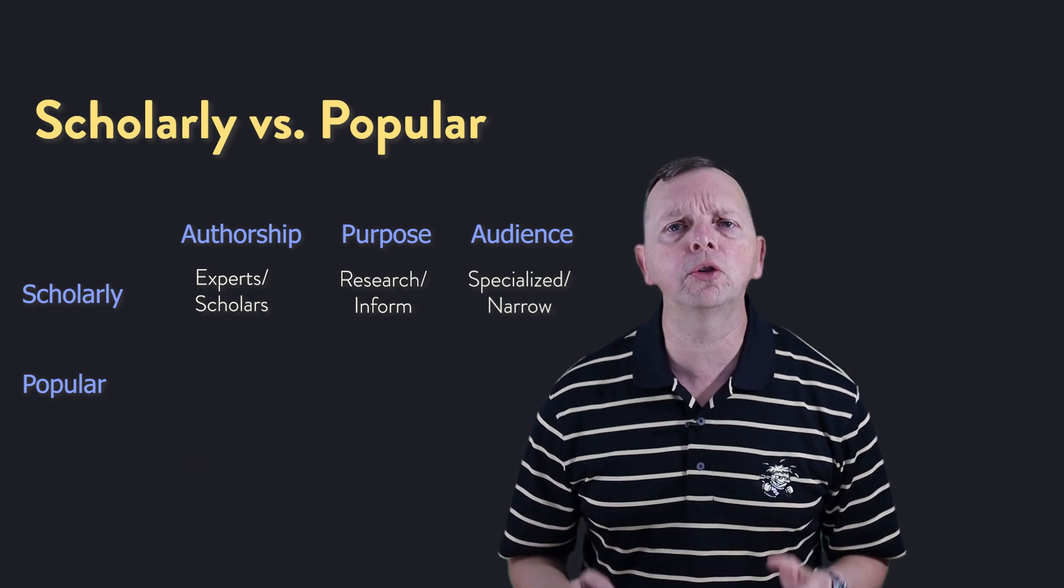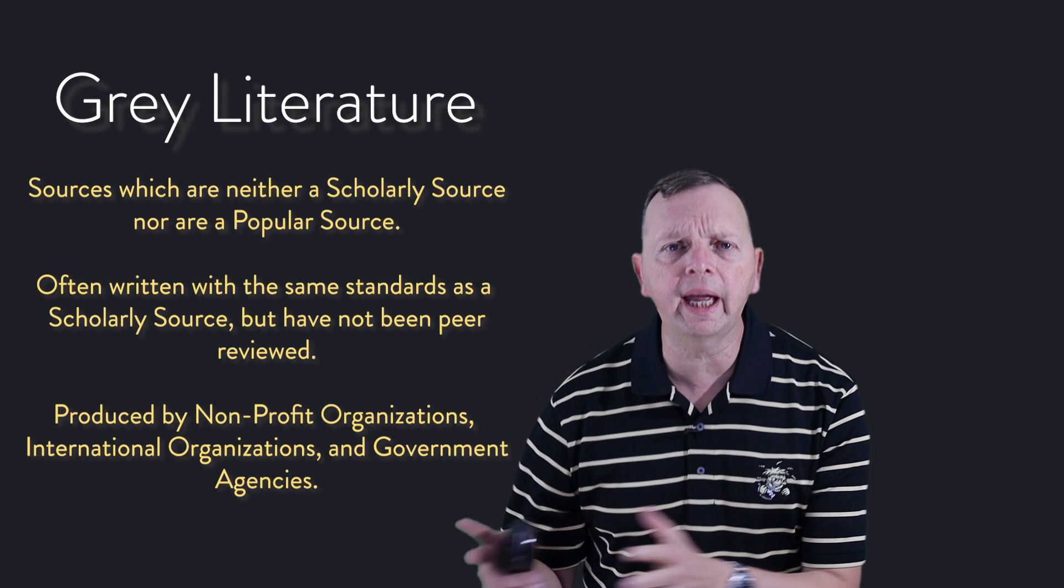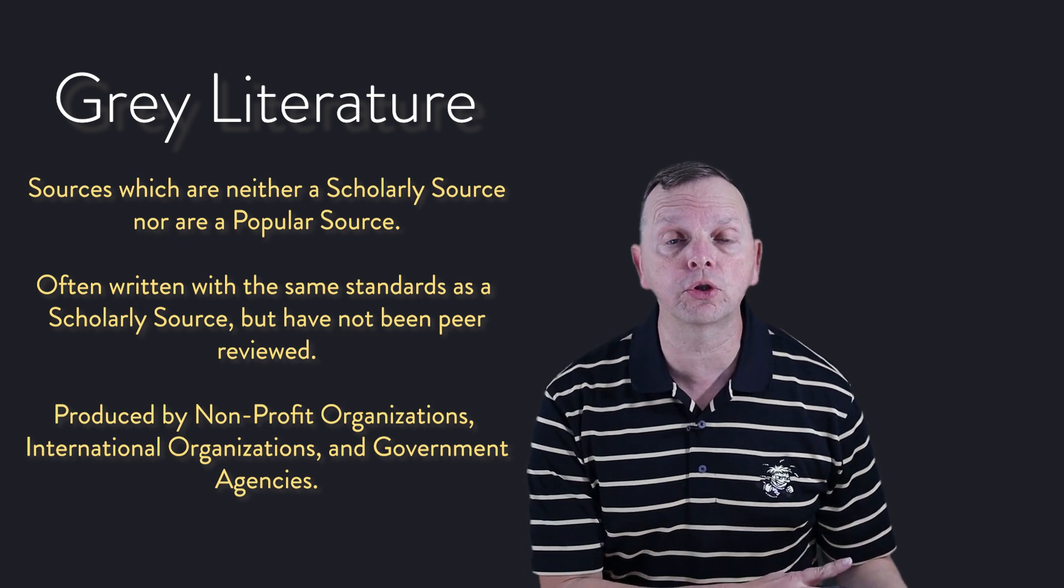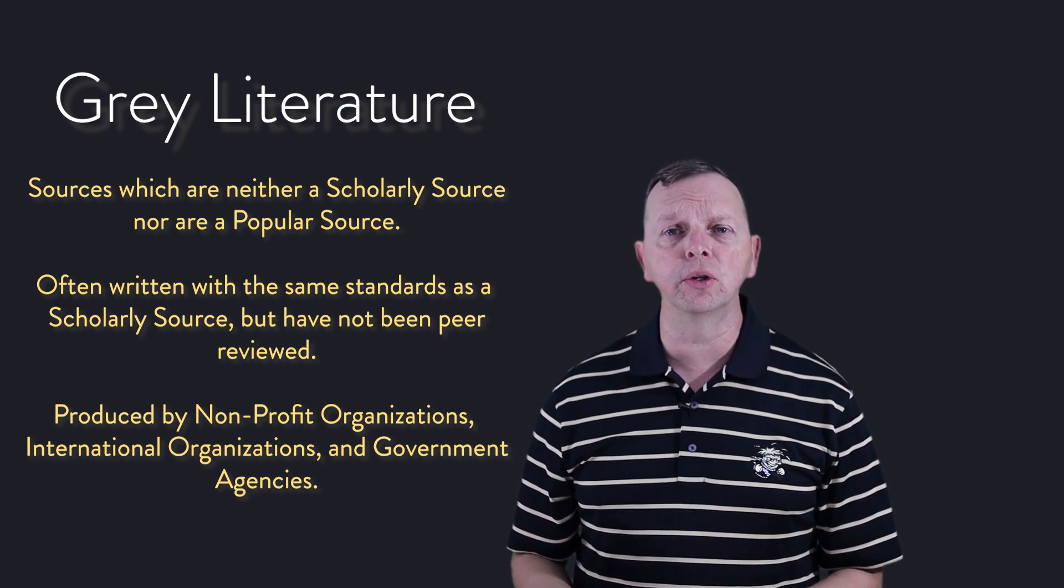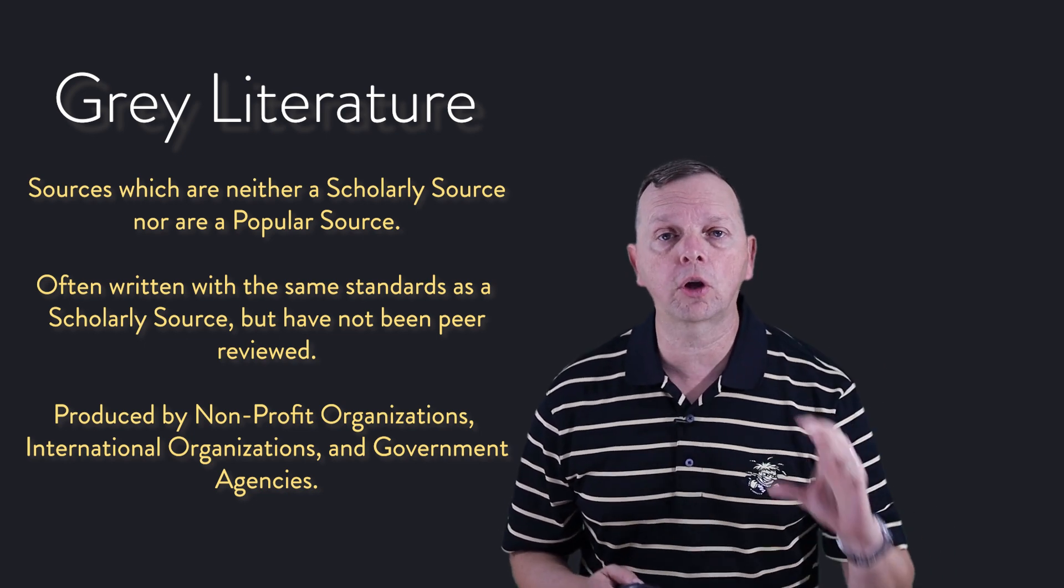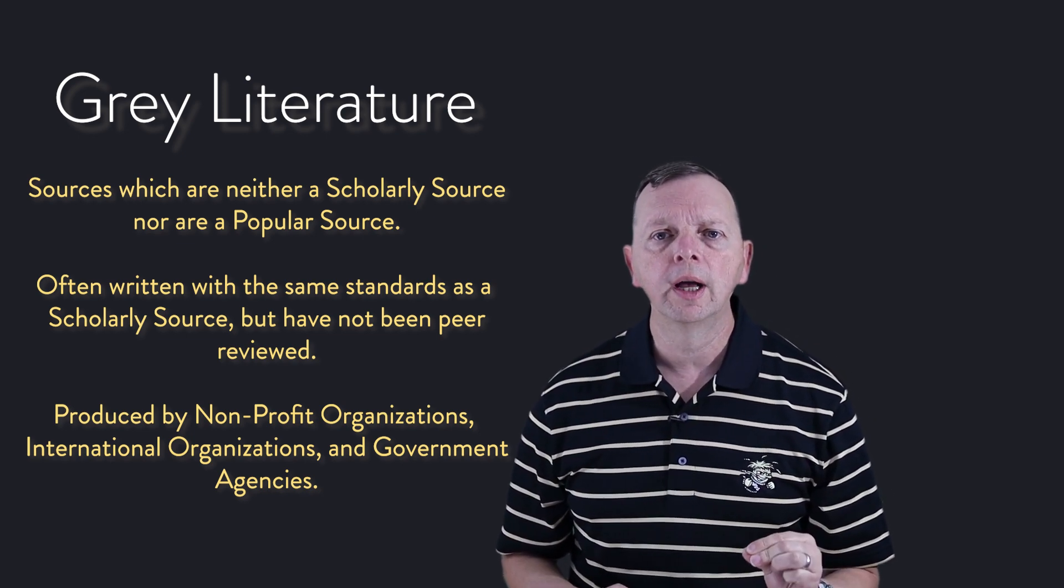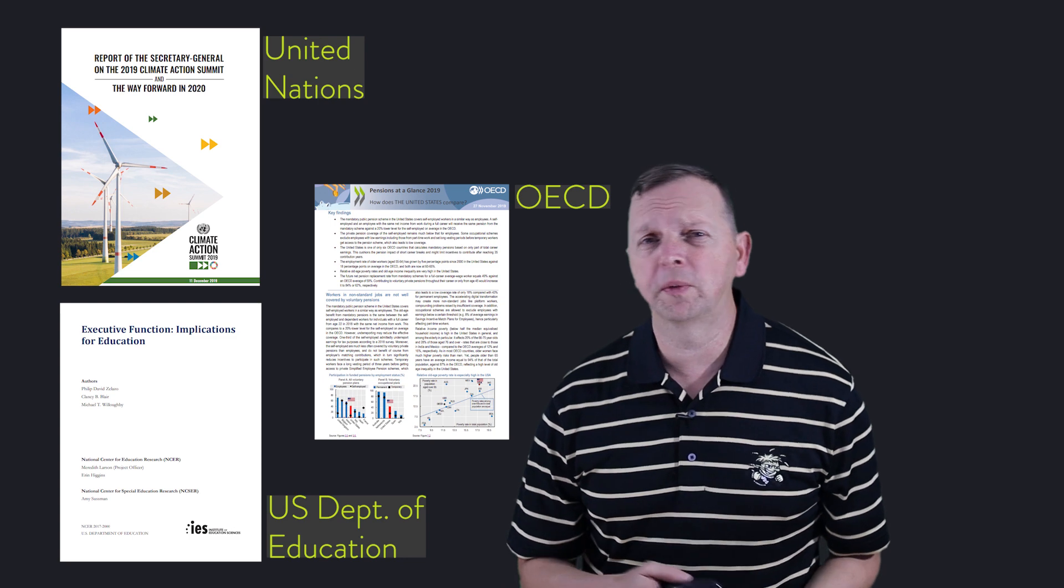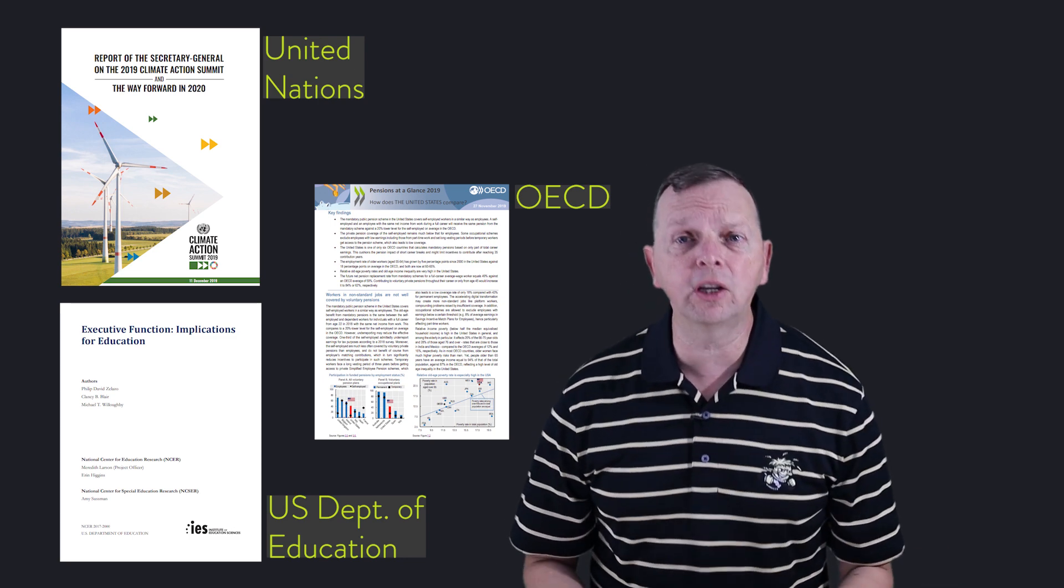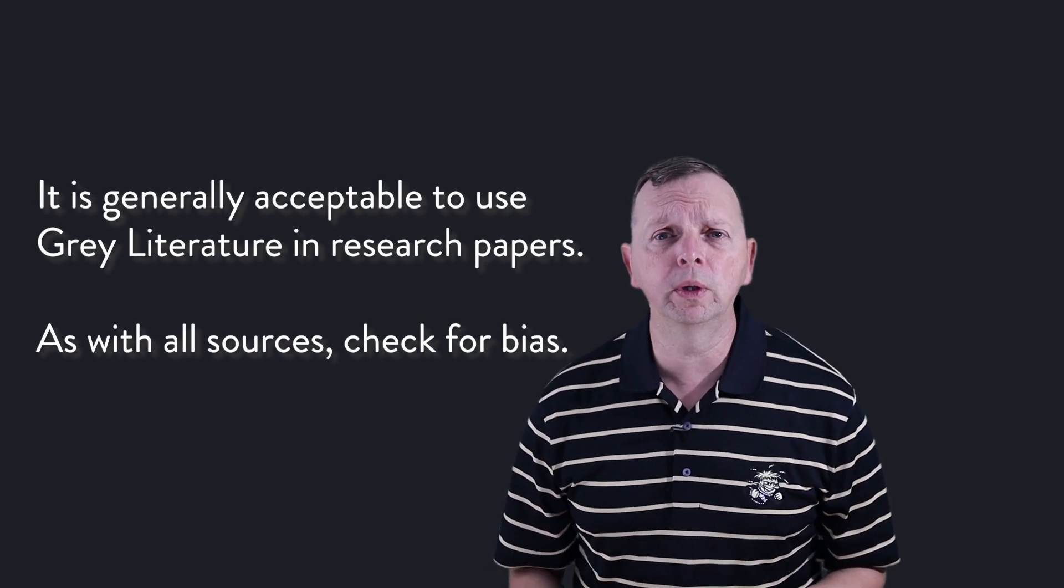Now, scholarly sources are usually always acceptable in any research paper you're going to write. Now, next to scholarly sources is something called gray literature. We call it gray literature because it's in that kind of gray area in between scholarly research and popular sources. Gray literature includes reports from government and non-private organizations. And often, they're very high quality, just like that of a scholarly source. However, they have not had the peer review process that you'll find in scholarly sources. And you need to check for bias as we do for all sources. Examples of gray literature are reports from the United Nations, the World Bank, the OECD, Congressional Research Office, among others. Generally, gray literature sources are acceptable in most research that you're going to do.